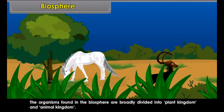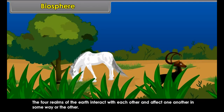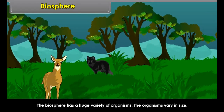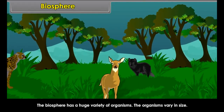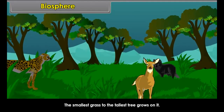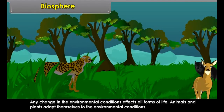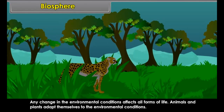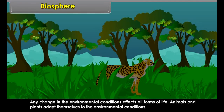Hydrosphere. The Greek word hydro means water. There are vast areas on the earth's surface which are covered with water. Water covers 71% of the earth's surface. The major water bodies like oceans, seas, lakes, ponds etc. constitute the hydrosphere. The earth is called the blue planet because it looks blue from the sky due to water on it.